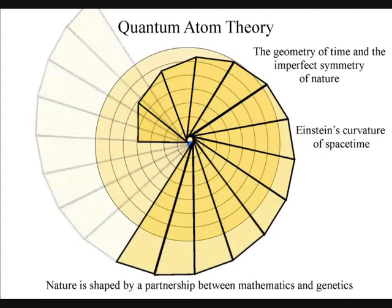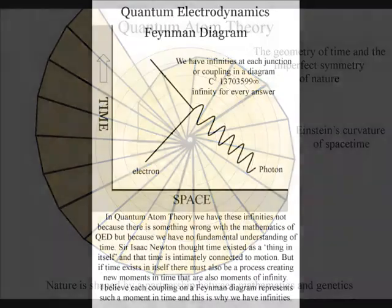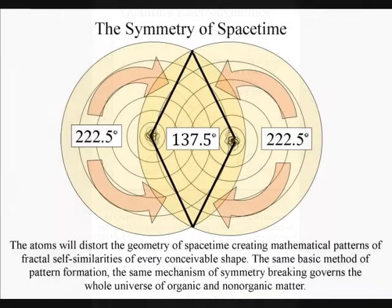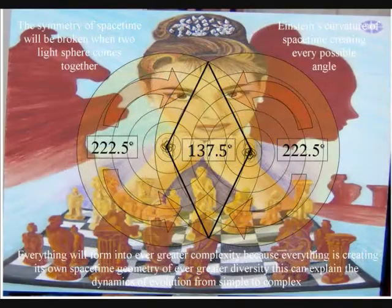In quantum atom theory, it is the emission and absorption of light, or electromagnetic radiation, from one atom to another that forms the forward momentum of time, continuously creating the broken symmetry of space-time.